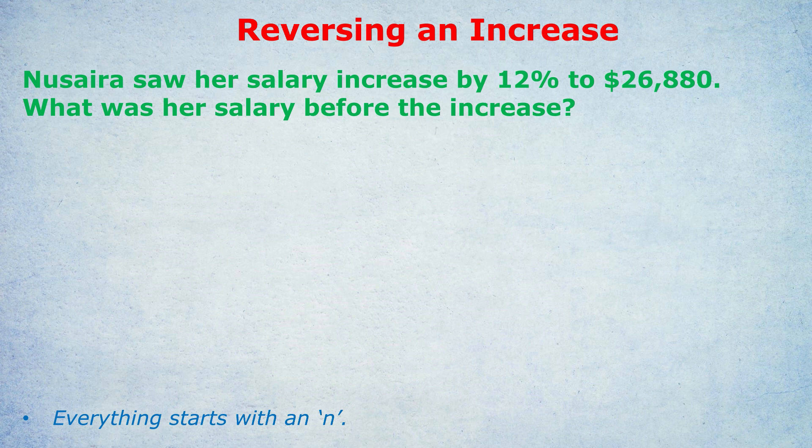Increasing by 50% and then decreasing by 50% doesn't get you back to the original amount. Think of 100: if we increase 100 by 50%, we get 150. Decrease 150 by 50% and we're down to 75 — not back to 100. So in this example, to undo a 12% increase, we can't just take away 12%. That won't get us back to her original salary.